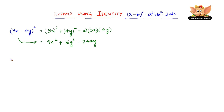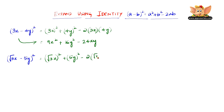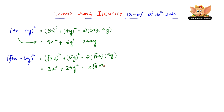Now let us consider another one which is (√3x - 5y)². This is nothing but (√3x)² + (5y)² - 2 × √3x × 5y. (√3x)² is 3x², plus 5 × 5 = 25 and y × y = y², minus 2 × √3 = 2√3, and 2√3 × 5 = 10√3, and x × y = xy.